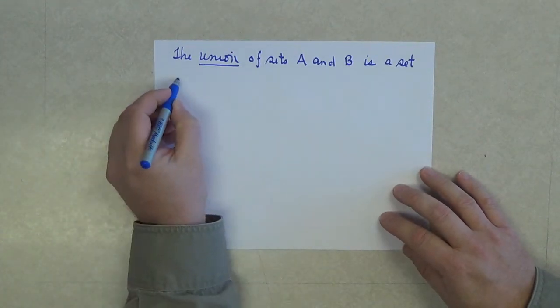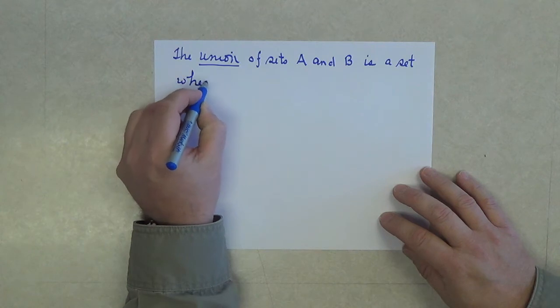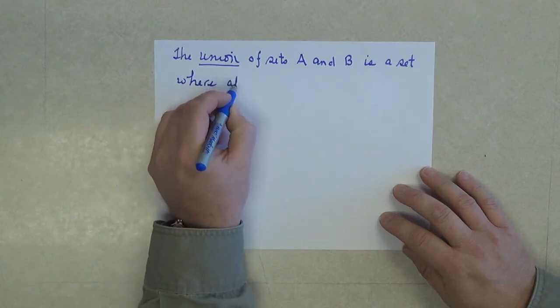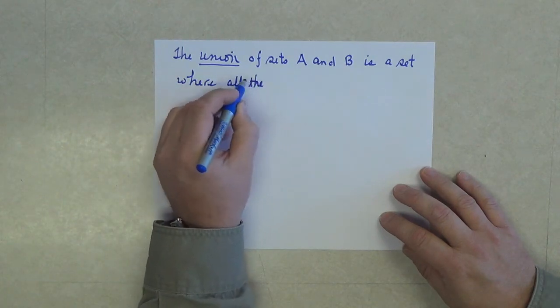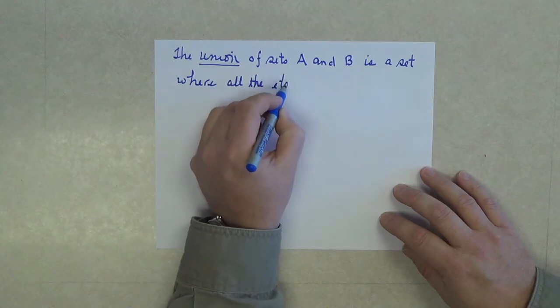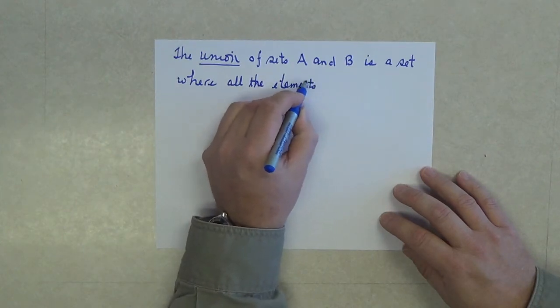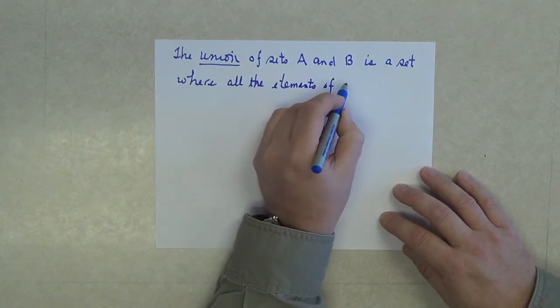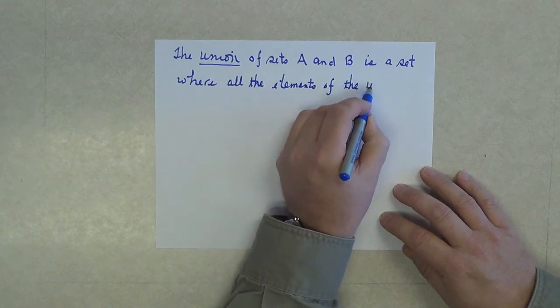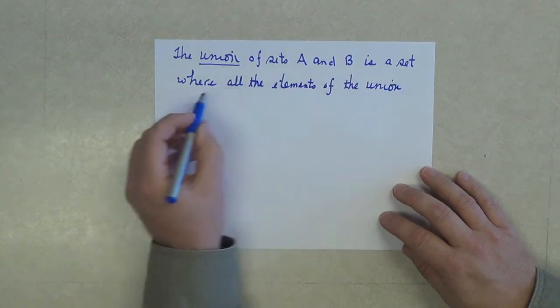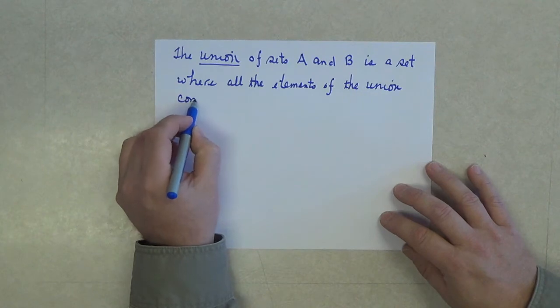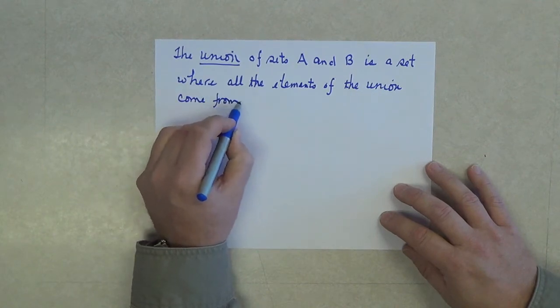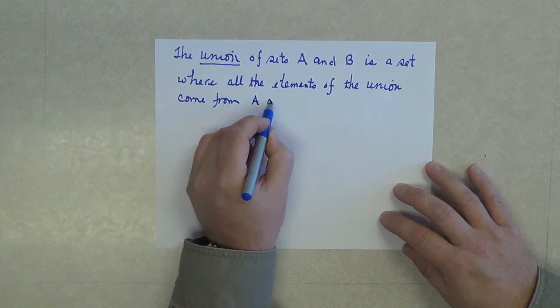Is a set where all the elements of the union come from the sets A and B.